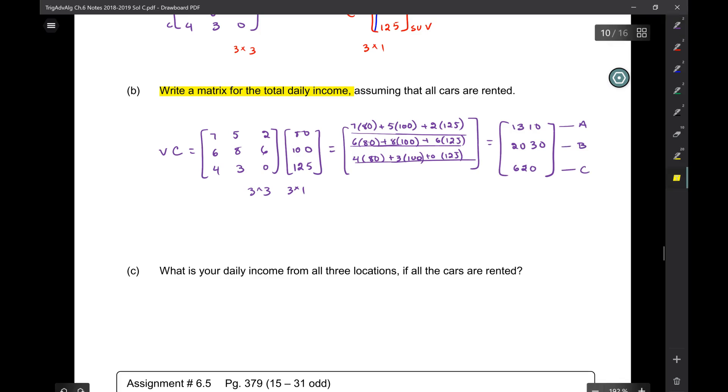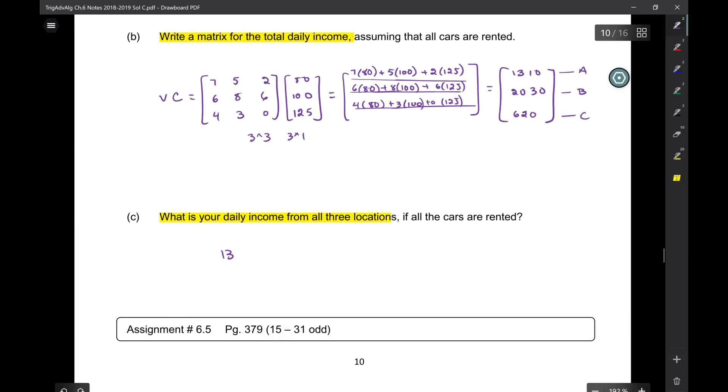Now, in total, from all three locations, how much money are you going to get? Well, you add all three of them. 3,960.